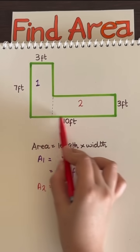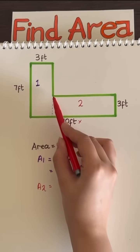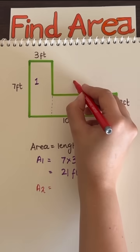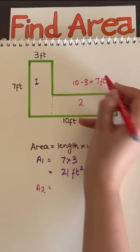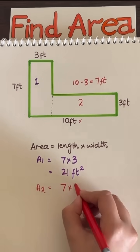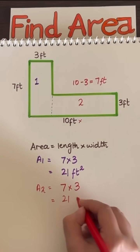And for the second rectangle, the length is not 10 feet anymore. Since we just cut it up, we can find the new length by taking the full 10 feet minus the three feet to get seven feet. So the area will be seven times three, which equals 21 square feet.